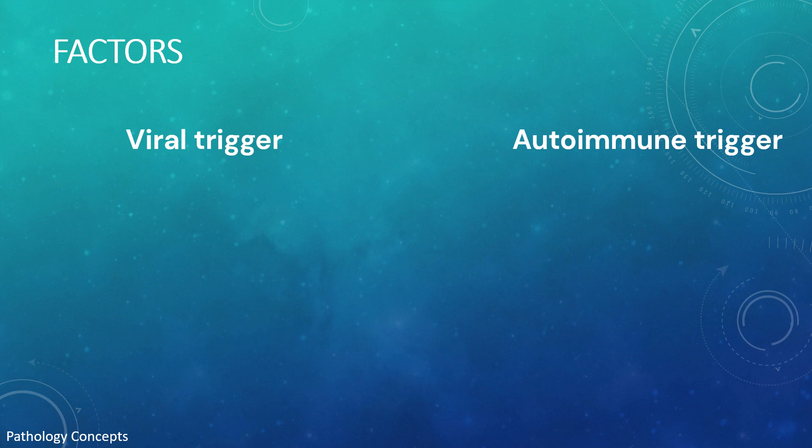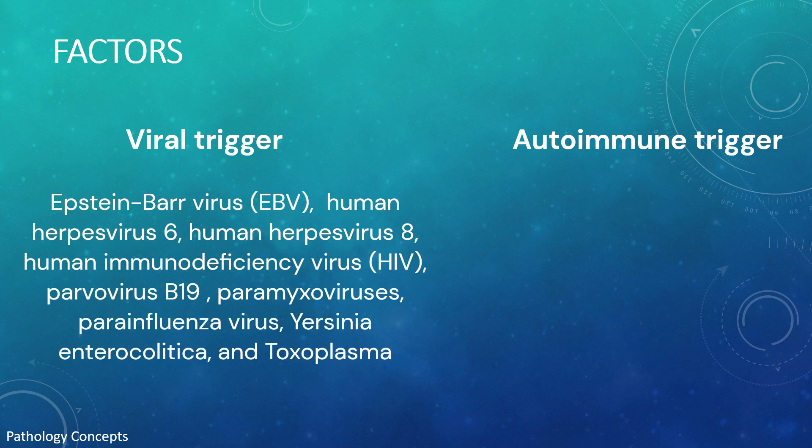The histological and clinical presentations suggest either a viral or autoimmune trigger for T cells and histiocytic immune response. Viral infections that may be considered include Epstein-Barr virus, human herpesvirus 6, human herpesvirus 8, HIV, parvovirus B19, paramyxoviruses, parainfluenza viruses, Yersinia enterocolitica, and Toxoplasma.